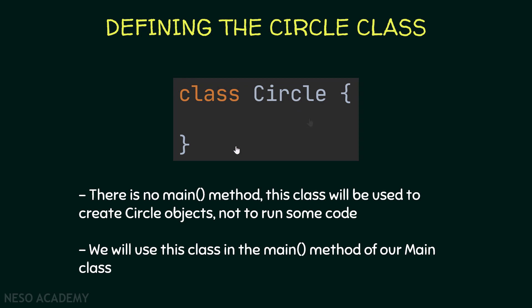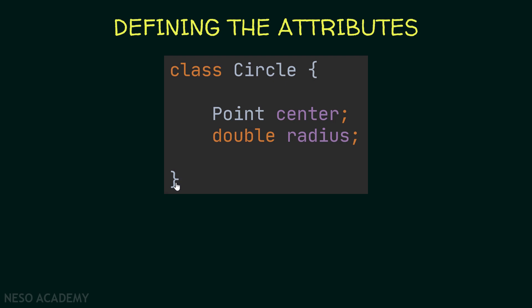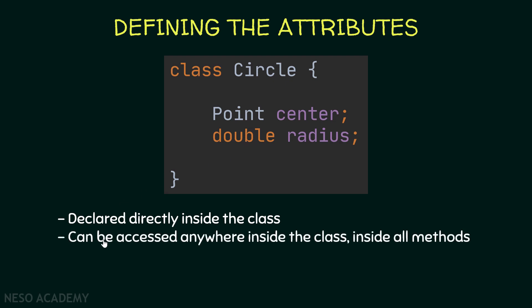The next step is to define the attributes of this class. Directly inside the class, I'm declaring two variables: a Point called center and a double called radius. These variables are declared directly inside the class, not inside a method. Variables declared inside methods are called local variables, but these are attributes or instance variables, and they can be accessed anywhere inside the class.